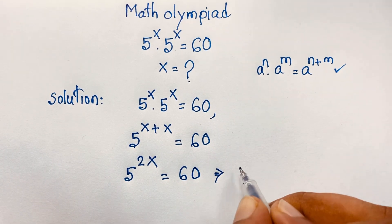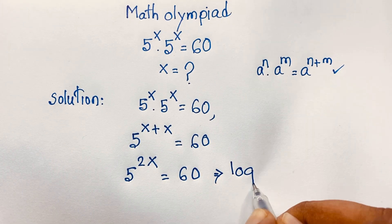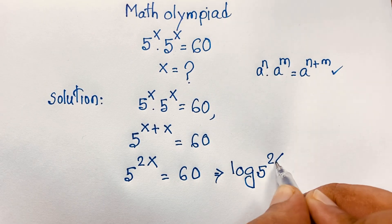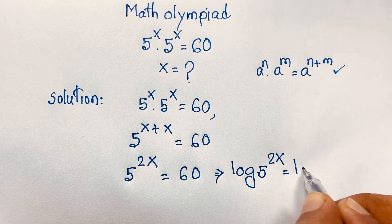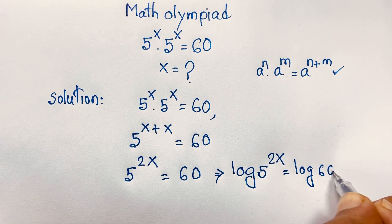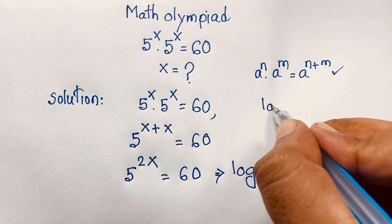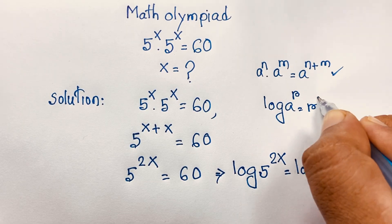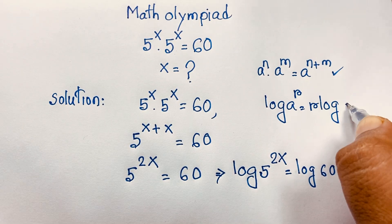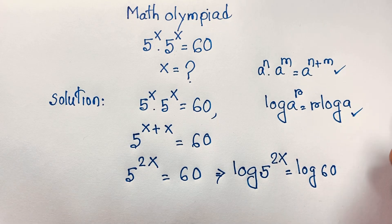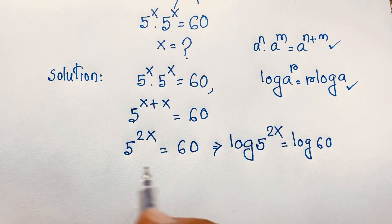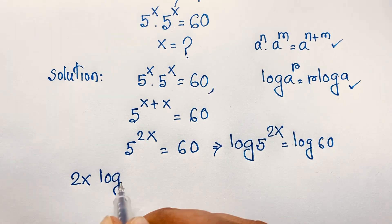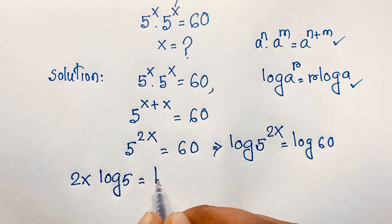At this moment, I apply the natural log to both sides: log of 5 to the power 2x is equal to log 60. We know that log a to the power r equals r times log a. Applying this formula, it will be 2x times log 5 equals log 60.